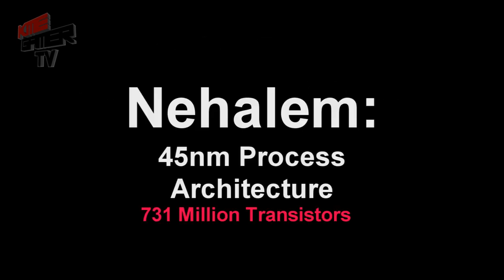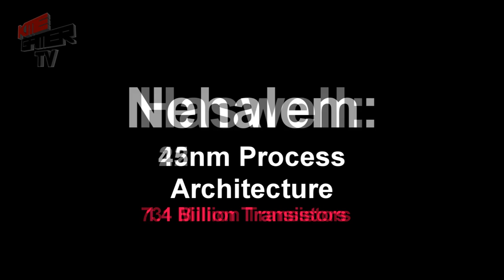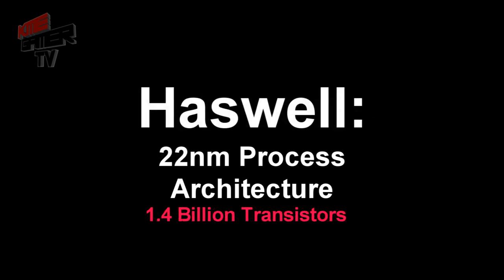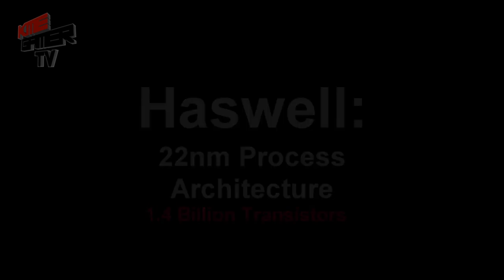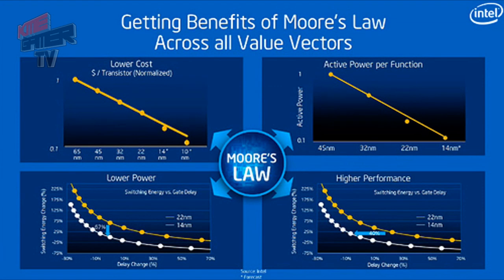The first generation i7 had a 45-nanometer process architecture and 731 million transistors. Today it uses a 22-nanometer process and has over 1.4 billion transistors. Despite these improvements in CPU technology, there is a schedule that seems to govern progress, known as Moore's Law.